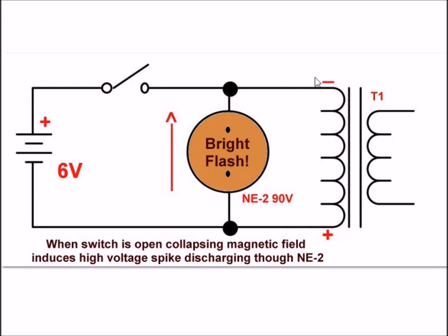But nonetheless, the magnetic field that was created, when it collapsed, it induced a high voltage output from the transformer.